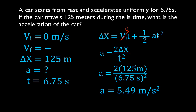So you'll notice the process is the same across all problems. Step one: write down all five of the variables. Step two: write down what you're given and what you're trying to solve for — you're given three and solving for the fourth. Step three: choose the correct equation. Step four: rearrange the equation for the variable you're solving for. Step five: plug in the values and get the answer with the correct units. Follow those steps and you can do these problems pretty simply.